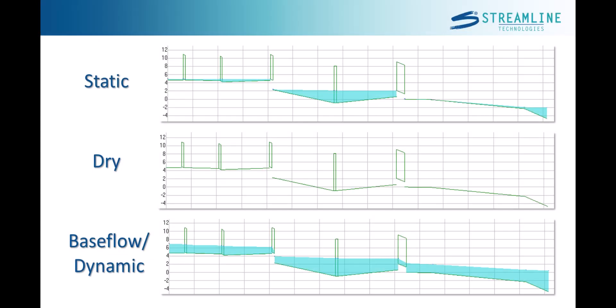When putting together your ICPR models, make sure to assign initial stages following one of these methodologies. Initial stages for static and base flow conditions can be determined using either a hot start simulation, or by running a drawdown simulation and cutting and pasting the final stages from the results into the node dataform. Now let's look at one final example where a mistake was made.